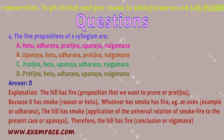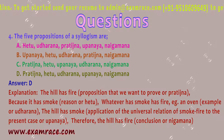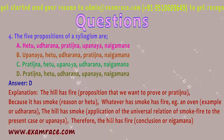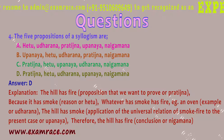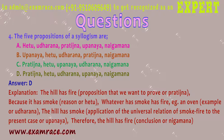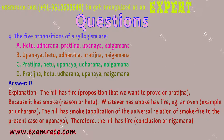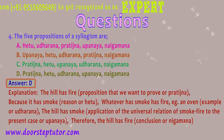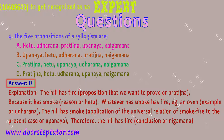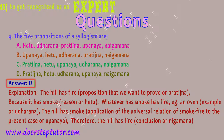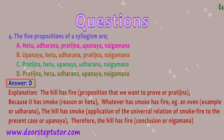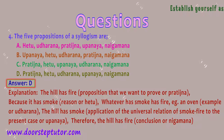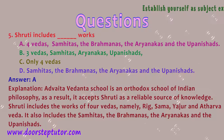Question 4: The five propositions of a syllogism — the correct answer and correct order are: first, Pratijna (the proposition we want to prove); second, Hetu (the reason); third, Udharana (the example); fourth, Upanaya (the application of the universal relation); and fifth, Nigamana (the conclusion).